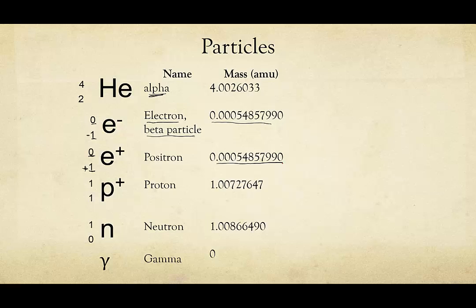We also have protons that can be ejected or come off and those are the same protons that you're used to always talking about. A mass unit of one, a charge of one. And then we have a neutron which is also the same thing that you're used to talking about. It has a mass unit of one and a charge of zero.